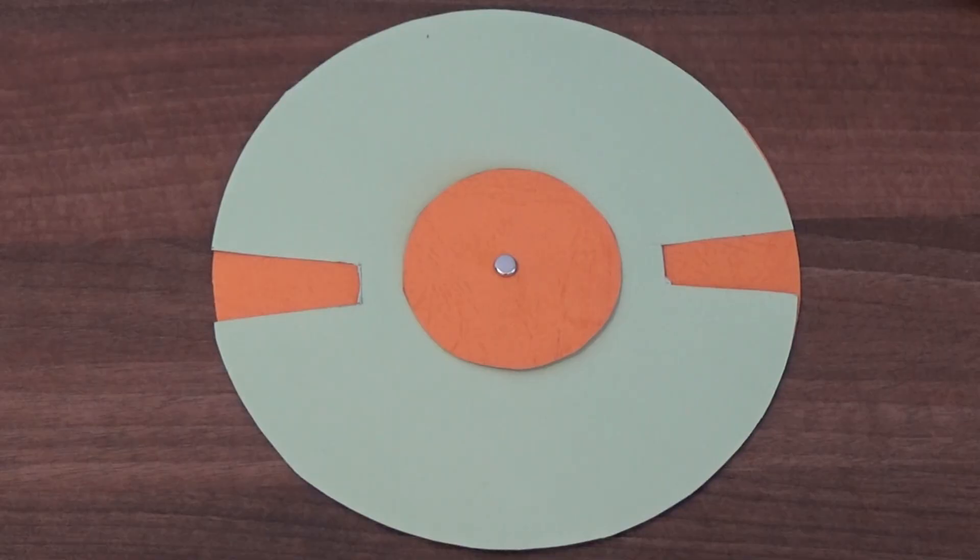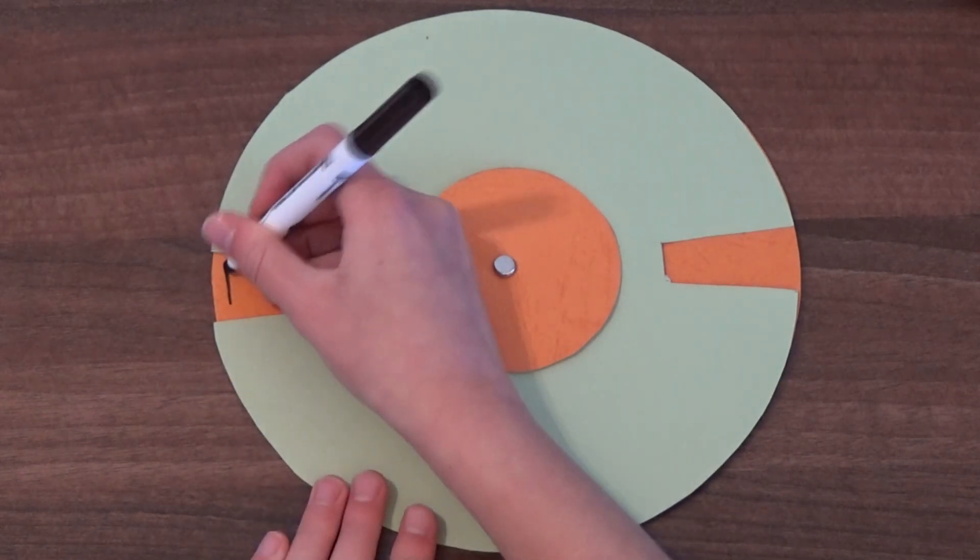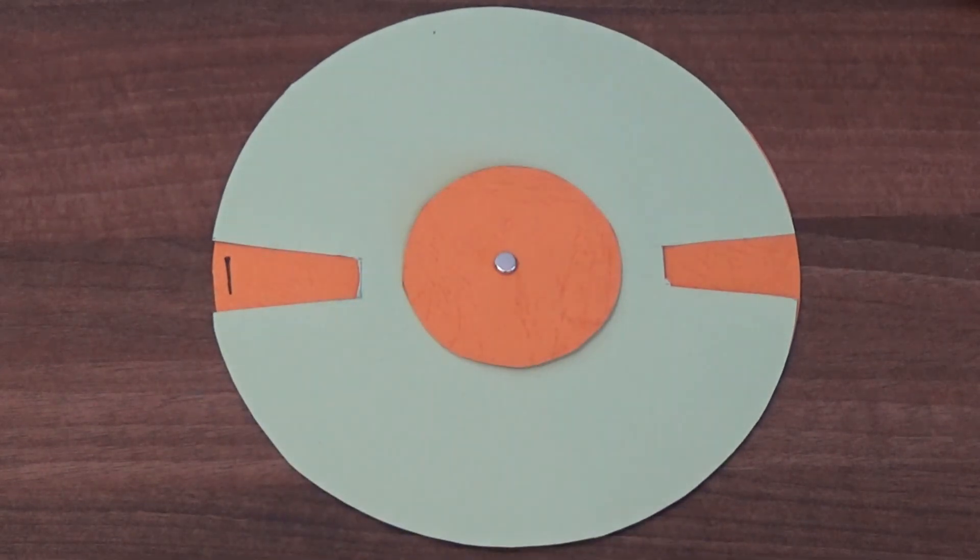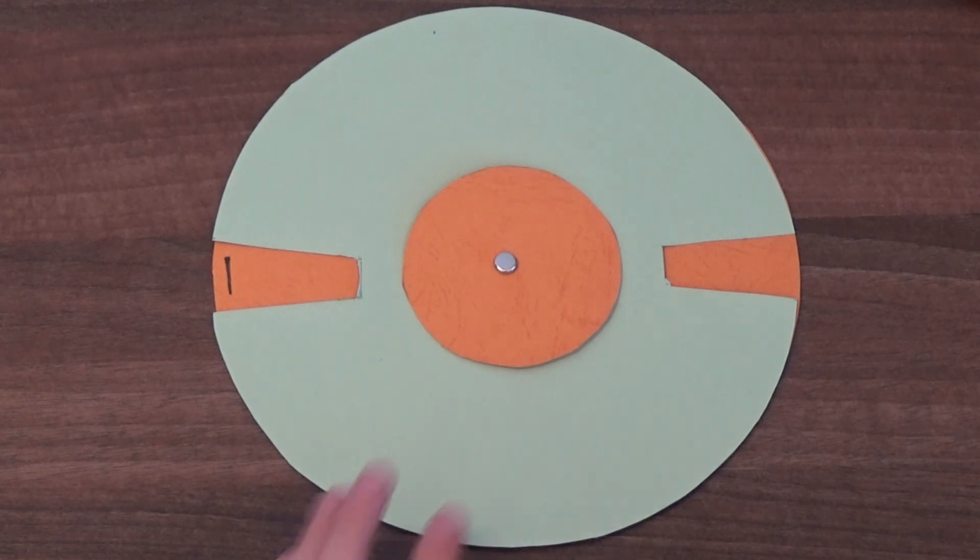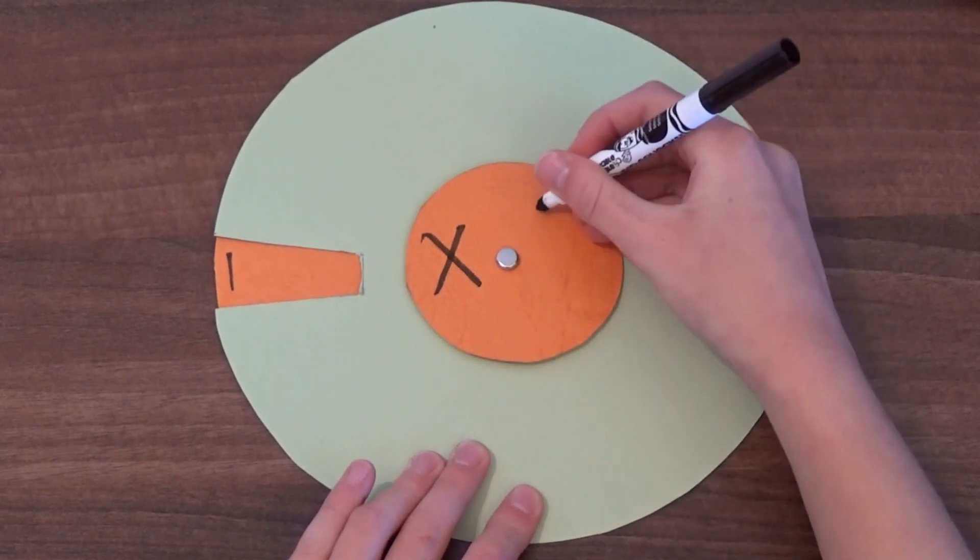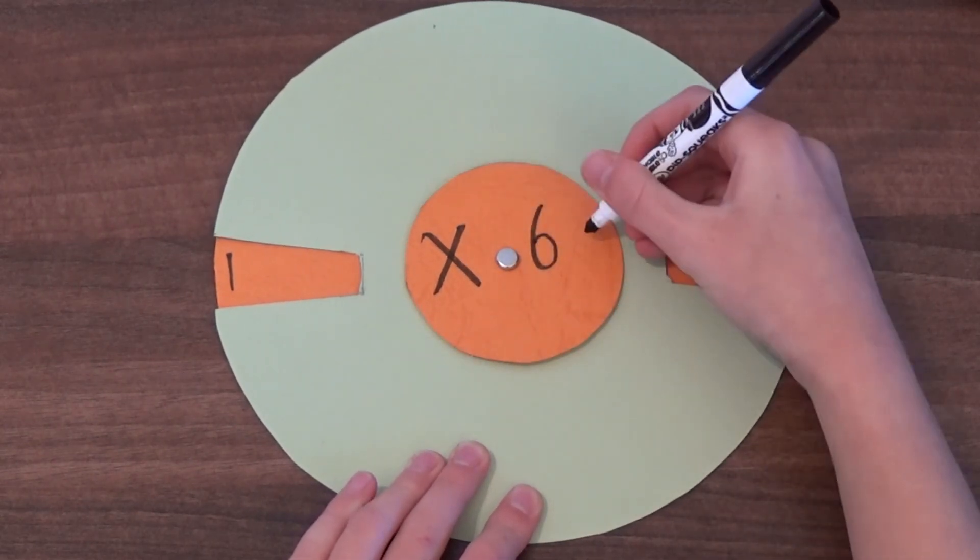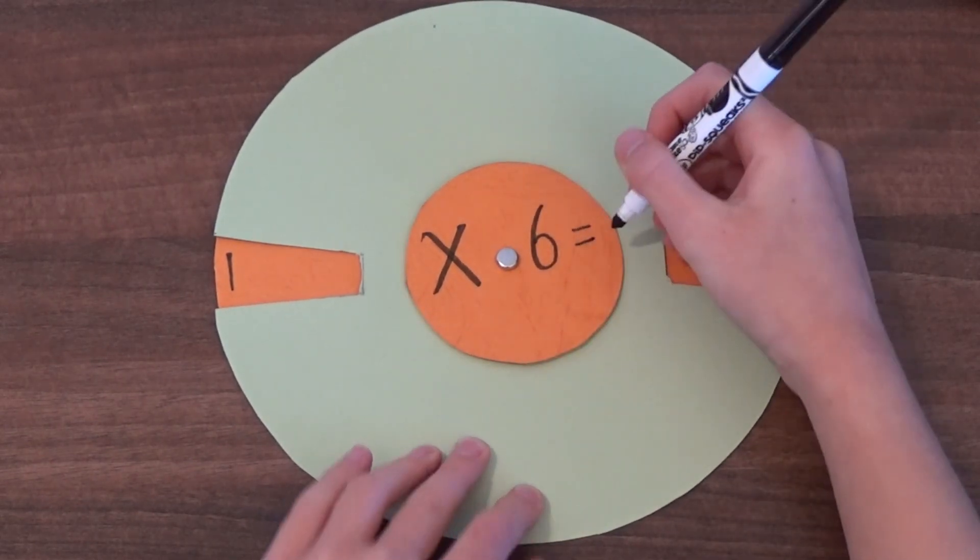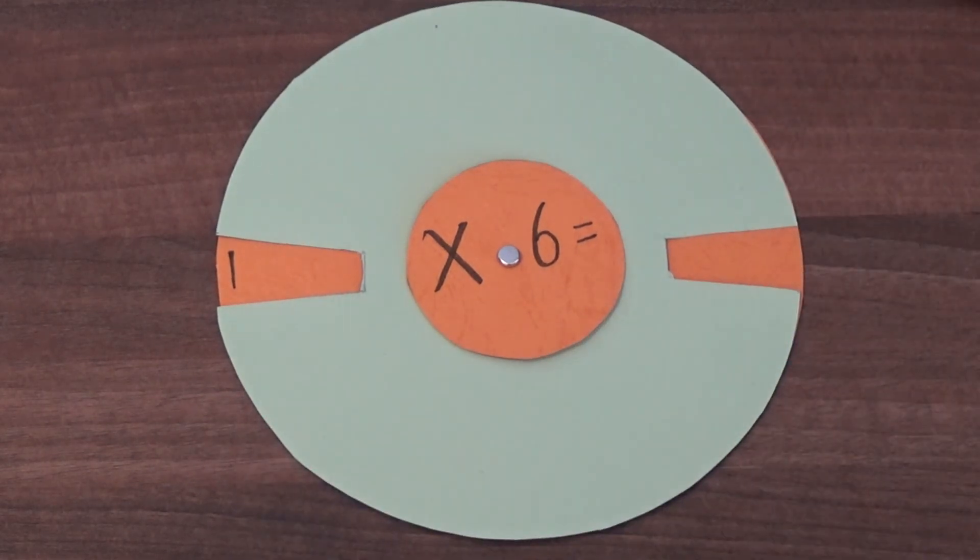In the first section I'm going to write 1. In the middle circle I'm going to write times 6 equals. And in the other section I'm going to write 6.